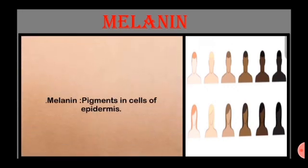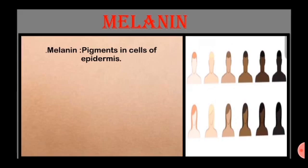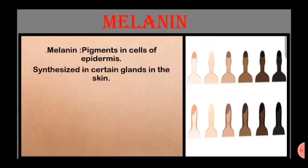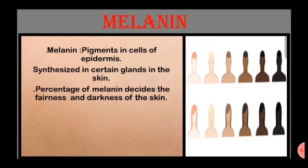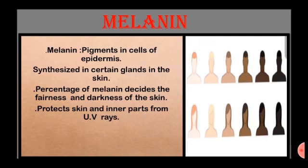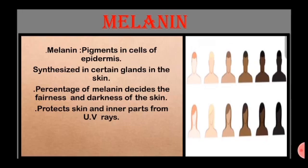A pigment called melanin is present in the cells of the epidermis. Melanin is synthesized in certain glands in the skin. The percentage of melanin decides the fairness or the darkness of the skin. The color of the skin also depends on the climate. Melanin protects our skin and inner parts from ultraviolet rays. It is the melanin that determines the color of our hair too. Jet black hair is due to pure melanin, brown or lighter hair is due to sulfur in the melanin, and reddish hair is due to iron in the melanin. Discriminating between people based on skin color is unscientific and wrong.